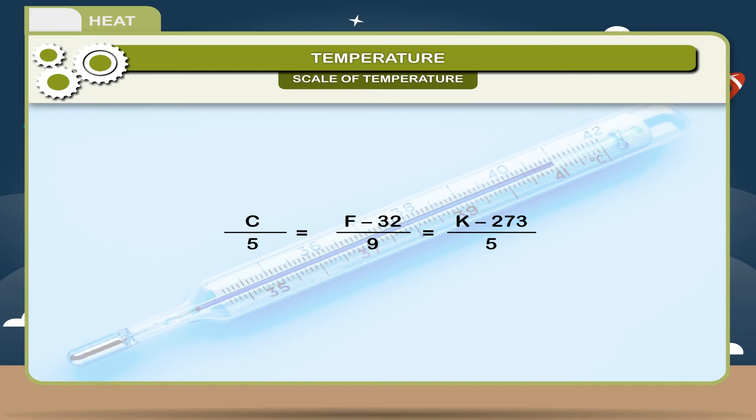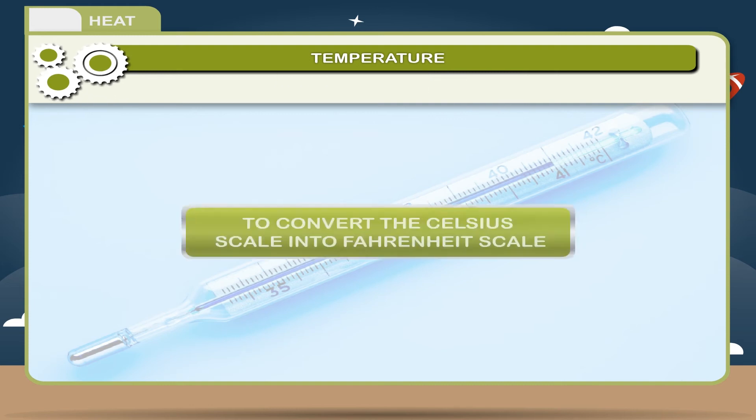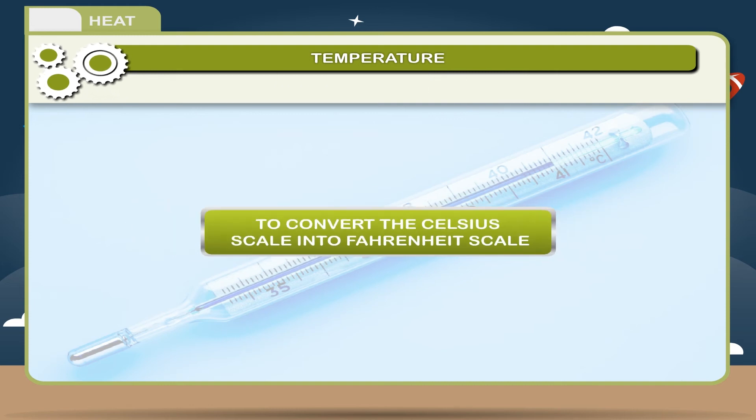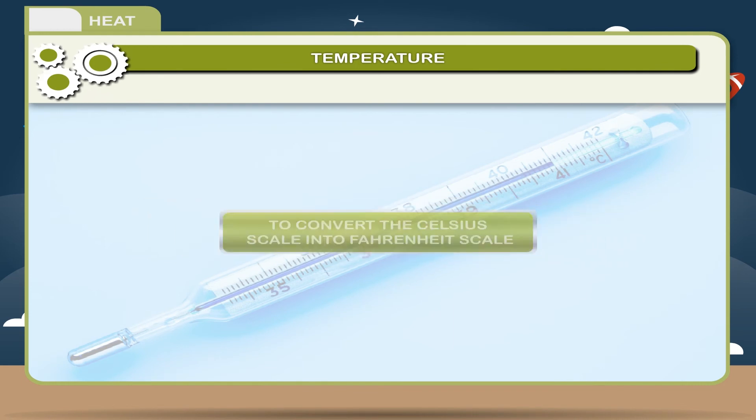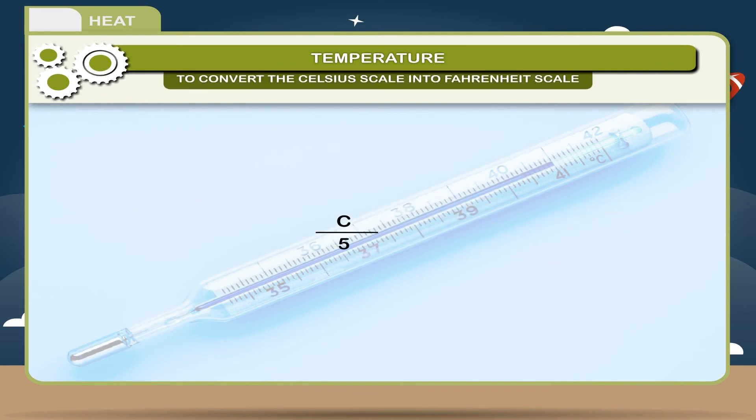To convert the Celsius scale into Fahrenheit scale: C/5 = (F - 32)/9, or F = (9C/5) + 32. Also, C = 5(F - 32)/9.